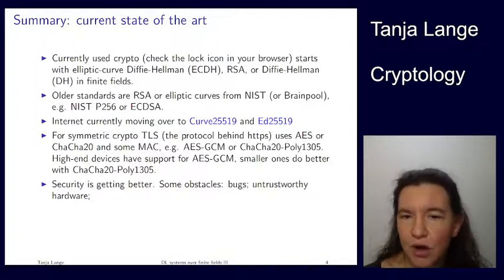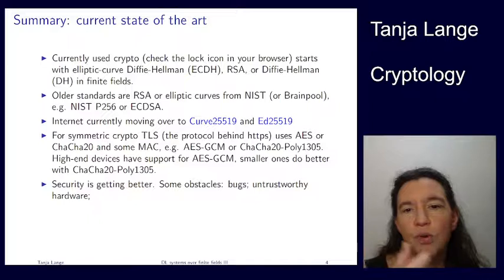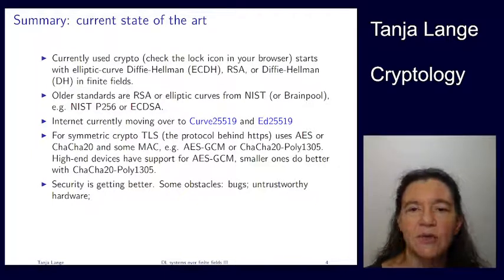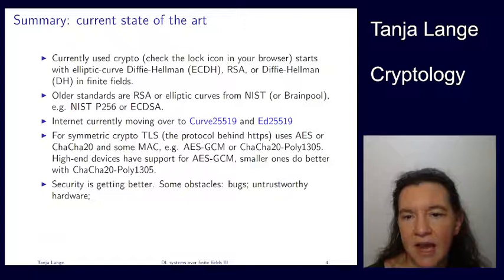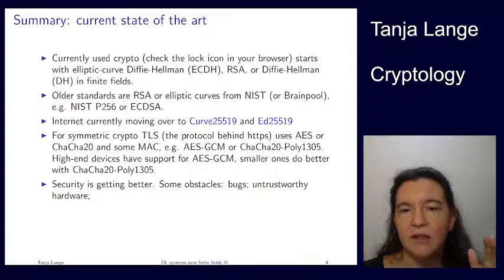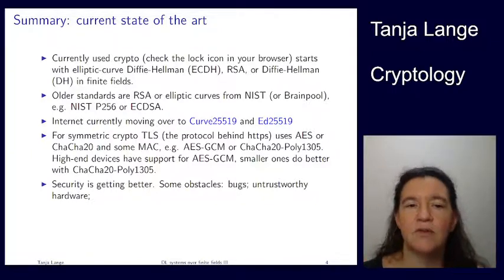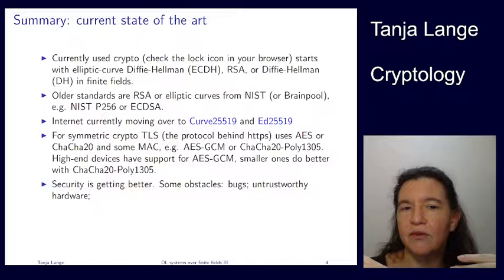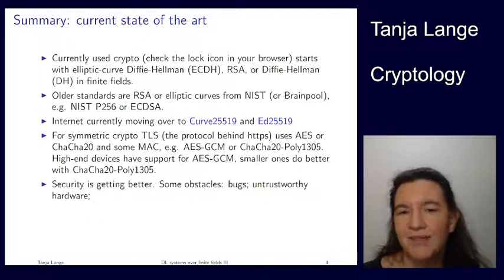We've seen in this course Montgomery curves and Edwards curves, and there's a trend towards those curves because they are more efficient and safer to implement. On the symmetric key side, TLS — the protocol behind HTTPS — uses AES or ChaCha20 with some MAC. For AES it's a mode and a MAC; AES-GCM is a mode and MAC at the same time, giving authenticated symmetric key encryption. For ChaCha, that's a stream cipher, so you use ChaCha20-Poly1305. High-end devices with hardware support for AES will typically use that, whereas smartphones use ChaCha20-Poly1305.